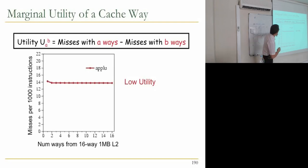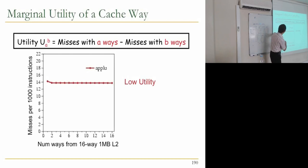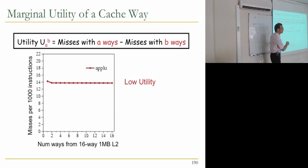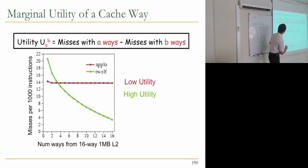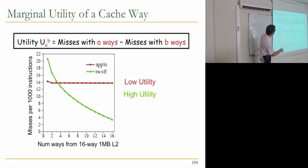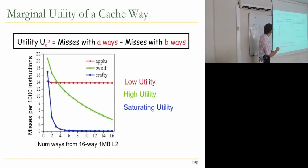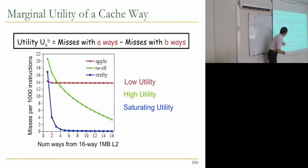As you give more ways — thinking of this as allocating 1/16th of the cache at a time — the streaming application's miss rate doesn't change regardless of cache size, so it has low utility. Whereas another application has very high utility: as you increase the dedicated cache size, its miss rate reduces significantly. That's an integer application with saturating utility — at a certain point it starts fitting in the cache. If you give it 5 out of 16 ways, 5/16ths of the cache, it just fits.